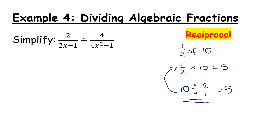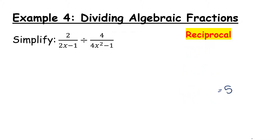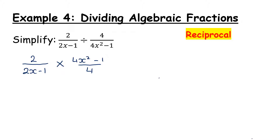To divide by a fraction, we can instead multiply by its reciprocal. In this example we're dividing by 4 over (4x squared minus 1), so using the reciprocal this becomes (2x minus 1) multiplied by (4x squared minus 1) over 4. It becomes much easier because we can now use our rules of multiplication. Like in the last example, it's better to do a little bit of factorization first. We have 4x squared minus 1, which you should be able to see is the difference of two squares — (2x)² minus 1² — giving (2x plus 1)(2x minus 1).